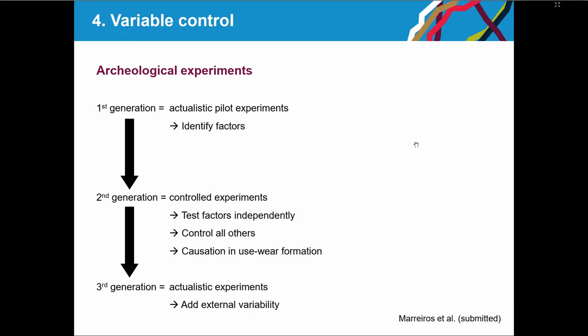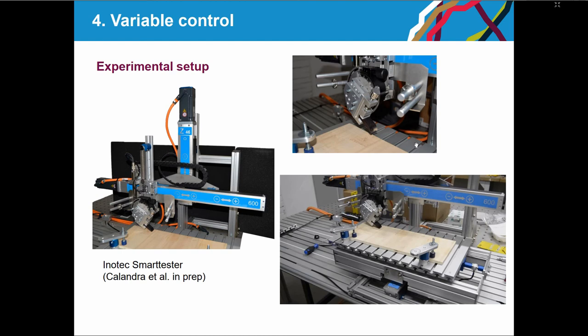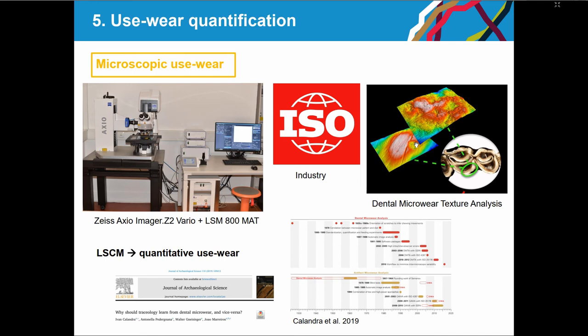We're working on a paper suggesting experiments can be organized in three levels. First-generation experiments are actualistic and pilot experiments to identify factors, test suitability of a tool for a given task, understand what variables affect final results. Then those variables are picked up for second-generation control experiments. Combining scales is also important — we should examine not just use-wear polish but also morphology, edge damage, and so on, combined with quantification methods borrowed from dental microwear.